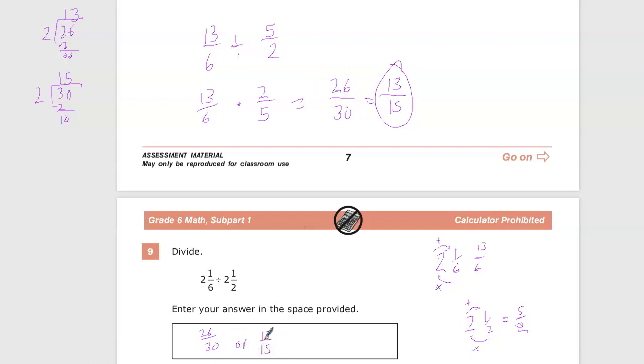So either one of those answers will be correct here. Just remember, when you do a division of fractions, you want to do keep it, flip it, switch it, because it's the quickest way to get the answer. And if you're given in mixed number form, you'll want to convert those directly into improper fractions first.